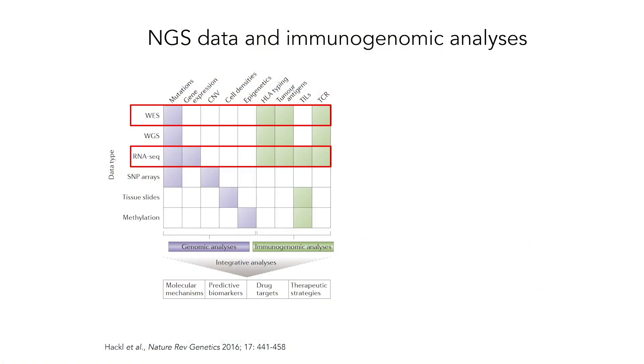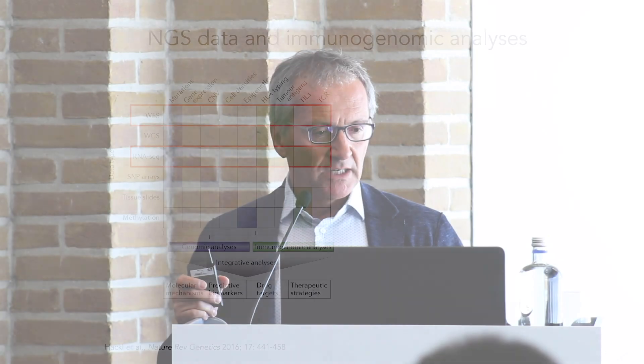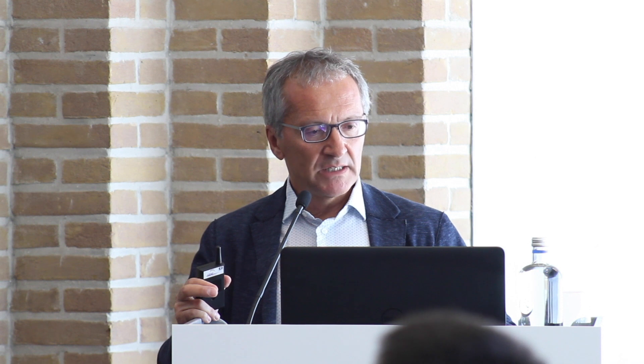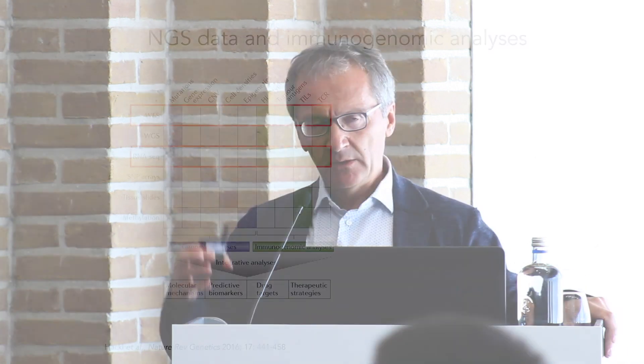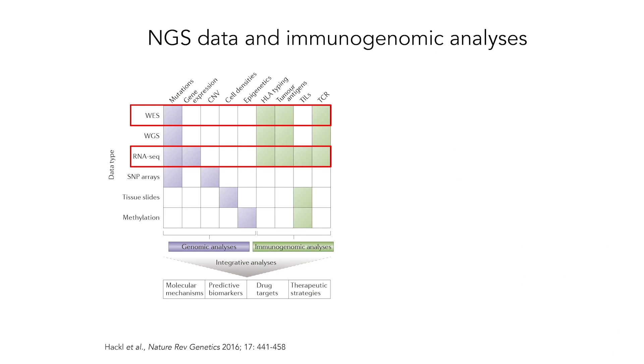You can use this data, specifically exome sequencing data and RNA sequencing data, to estimate the HLA alleles, which is then used to derive the tumor antigens. You can also use RNA sequencing data to estimate the tumor-infiltrating lymphocytes, and to a certain extent also the T-cell receptor repertoire.